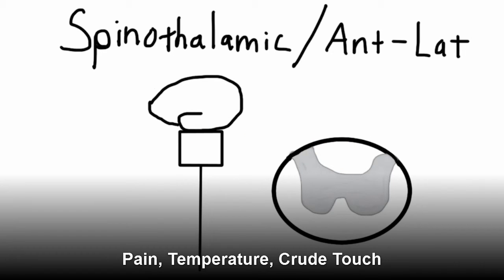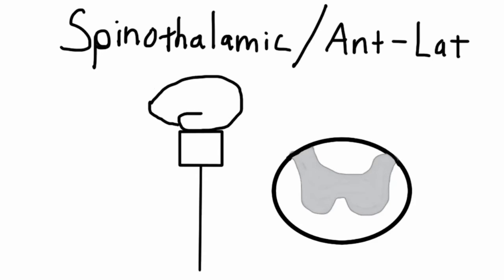Okay, moving along to our last one, the spinothalamic or anterolateral tract. It's called the anterolateral tract because of where it sits in the spinal cord. Pretty simple stuff. So, we'll start again with our dorsal root ganglion. DRG. We're going to enter the spinal cord and cross over immediately.